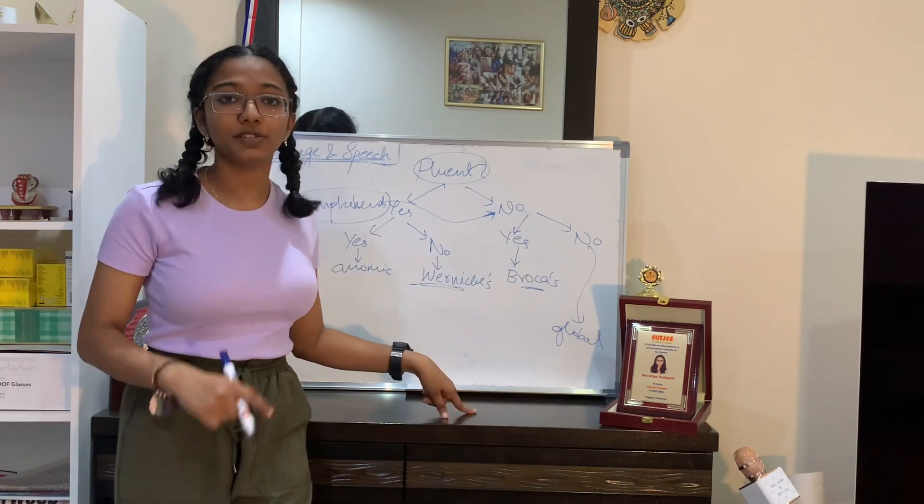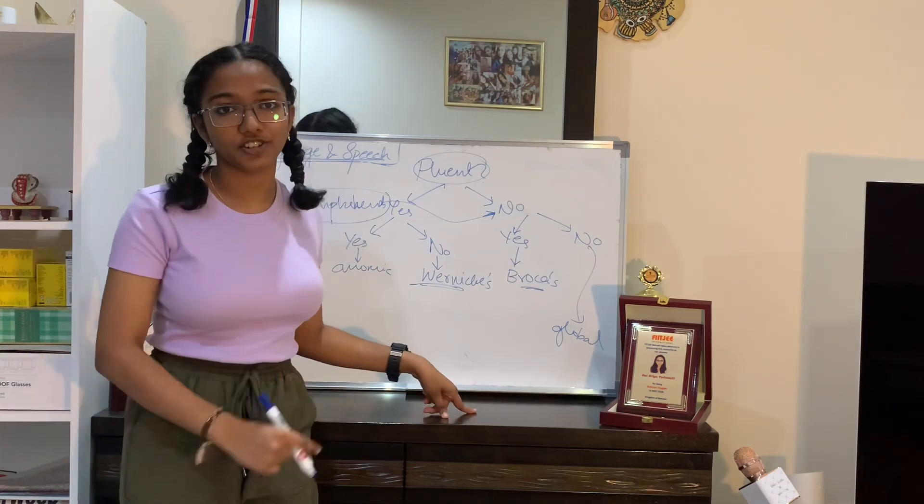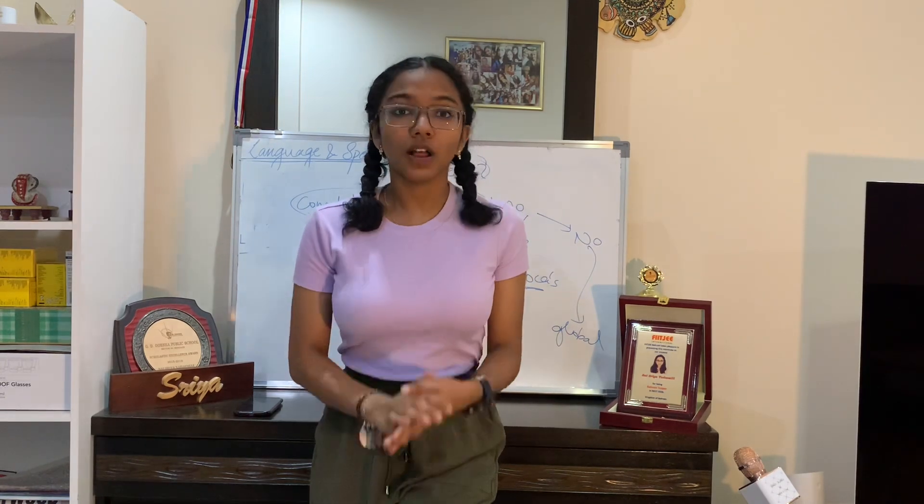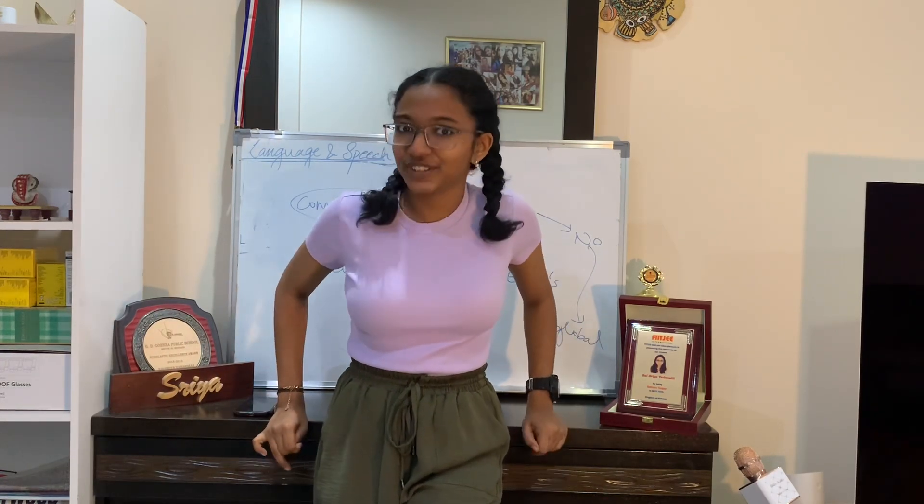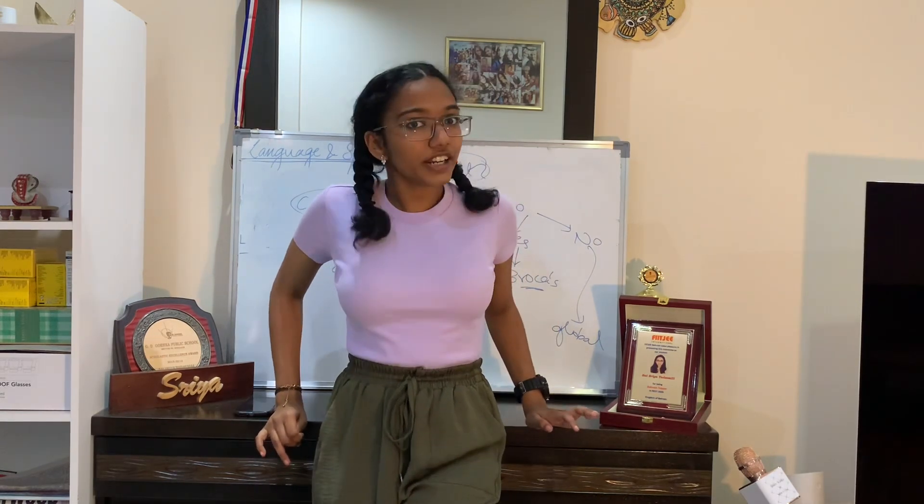In summary: Wernicke's area is responsible for comprehending thought, and Broca's area is responsible for word formation. That was the lecture for today. Thank you so much for watching — do let me know any suggestions for future videos, as I'll be free for the next month or two and plan to make as much content as you want.